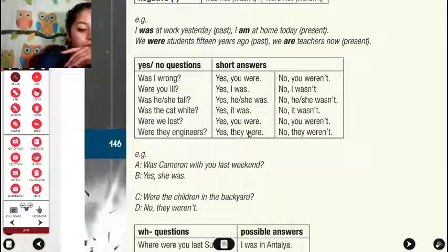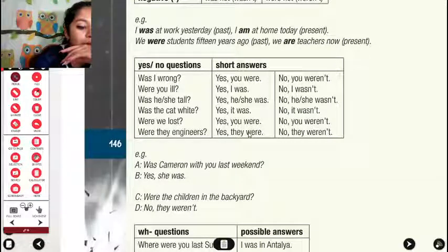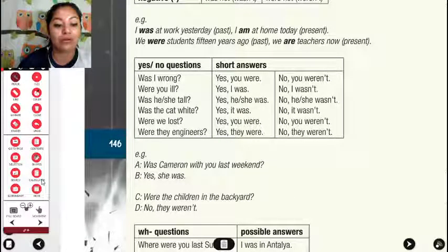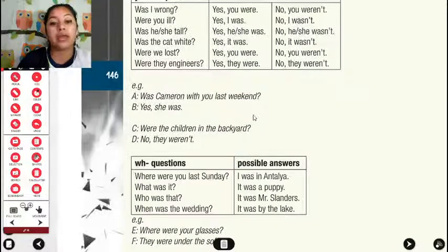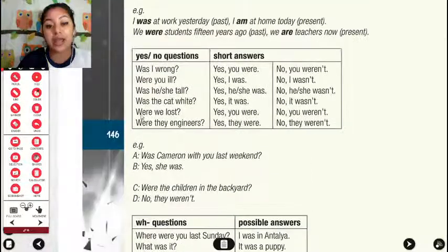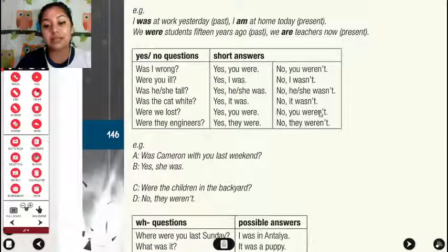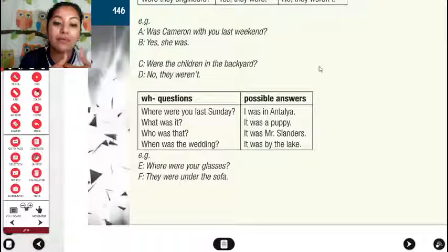For negatives, it's easier because we know it's either 'aren't' or 'weren't.' More examples: 'Was Cameron with you last weekend?' 'Yes, she was.' 'Were the children in the backyard?' 'No, they weren't.' These are just yes/no questions. They use the verb to be as auxiliary and don't need anything else. The verb to be is what defines it. Now we can have the WH-questions for past.